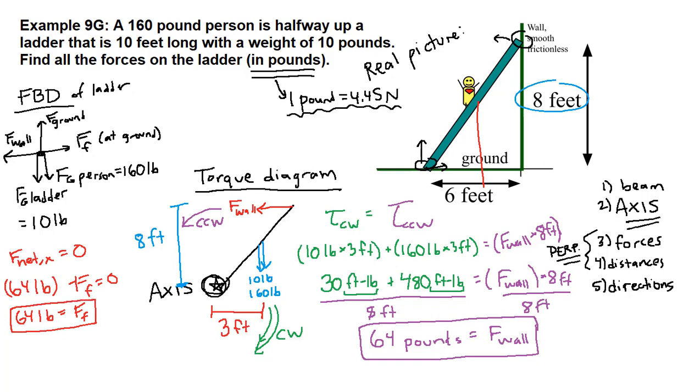And in the y-direction, f net y equals 0, we have that the ground force pushing up, minus 10 pounds minus 160 pounds equals 0. And so that tells us that the ground force, the normal force from the ground on the ladder, is 170 pounds.